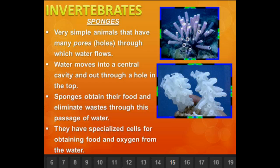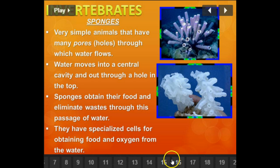The first invertebrate we'll study is the sponge. Sponges are very simple animals that have a whole bunch of pores where water goes in and out of one main central cavity. Water flows through the pores into the central cavity and out through a hole in the top. Sponges get their food and eliminate waste through that same passage of water. They have special cells to obtain food and oxygen from the water they take in.